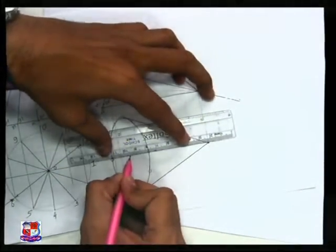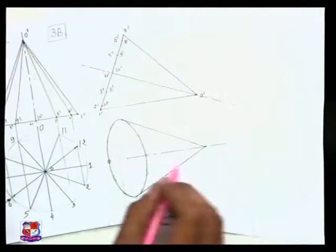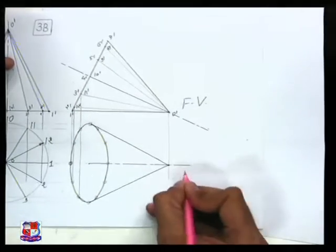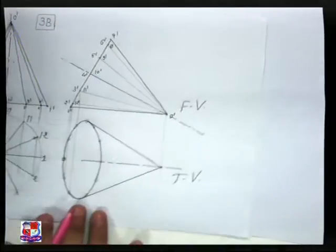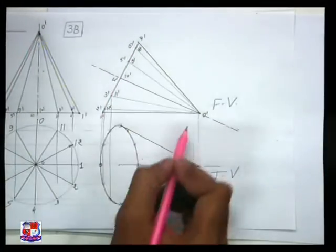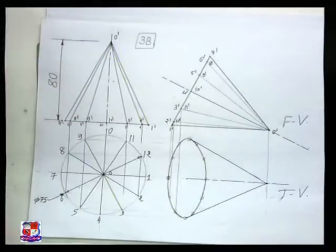This is the axis of this cone and name the views. This is front view and this is top view of given problem. Dimensions are given to us, it is slant, it is resting on its slant edge. So this is the solution of given problem.